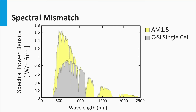Here we see the spectral power density function again. Let's consider the typical optical loss mechanism for a semiconductor with a band gap E-gap. We take crystalline silicon as an example, and we assume an EQE of 100% above the band gap for the solar cell.